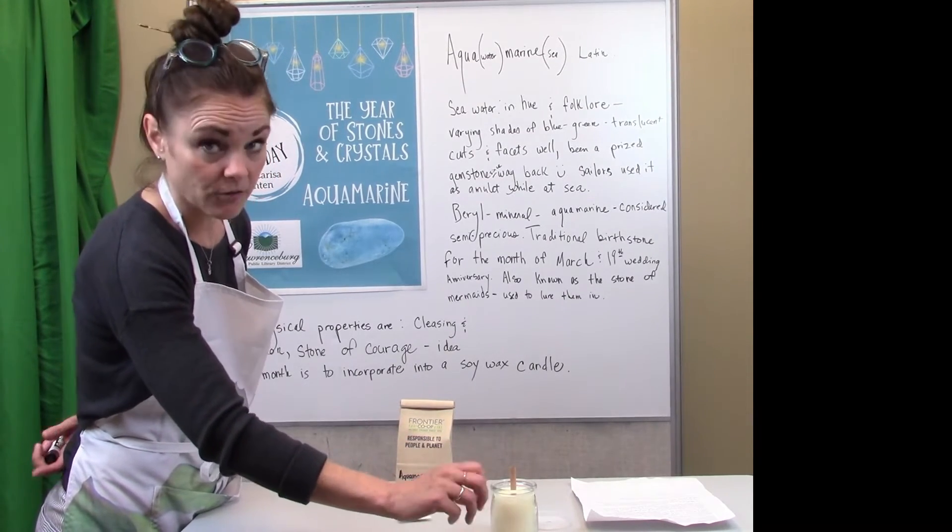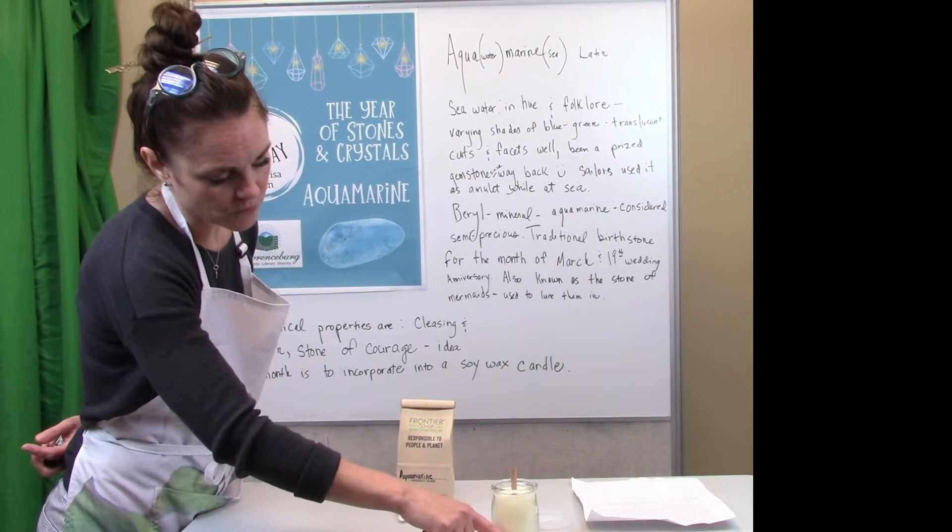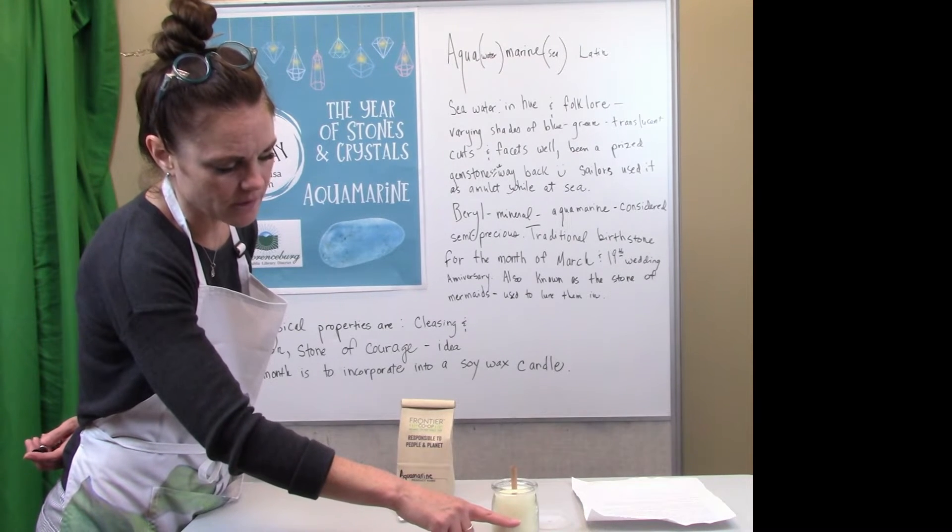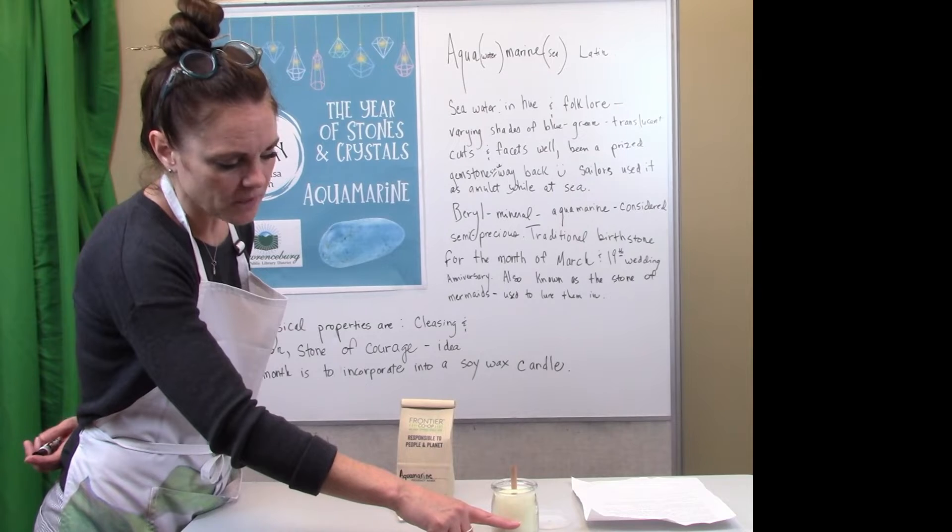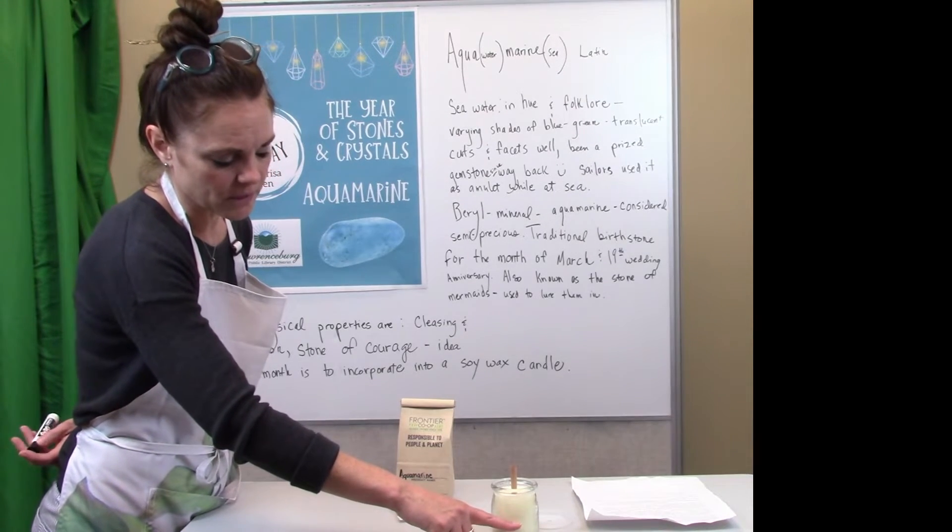So we'd anchor our wick and we would pour our melted soy wax just about halfway up, maybe I don't know, 40 percent up, and then let it harden. It solidifies and hardens rather quickly, probably within a half hour, 20 minutes.